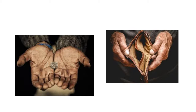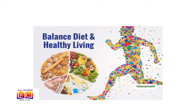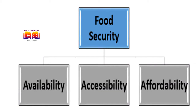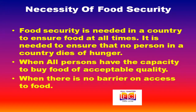Affordability of food implies that an individual has enough money to buy sufficient, safe and nutritious food to meet one's dietary needs. These dimensions conclude that food security is ensured in a country only if enough food is available for all persons, when all persons have the capacity to buy food of acceptable quality, and when there is no barrier on access to food.